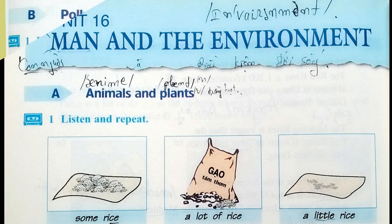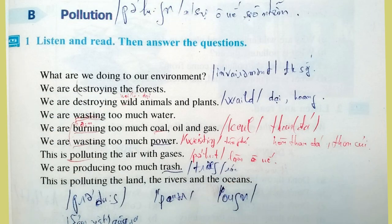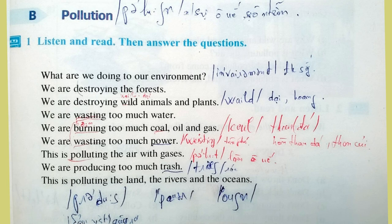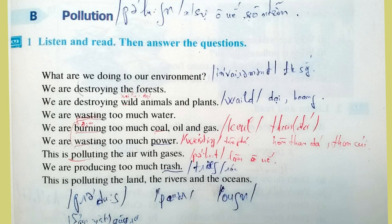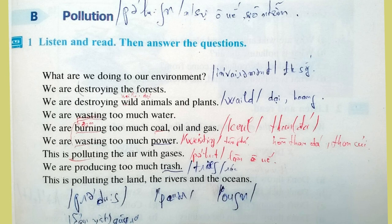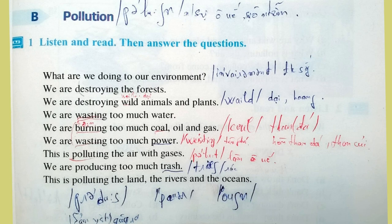Pollution. Listen and read, then answer the questions. What are we doing to our environment? We are destroying the forest. We are destroying wild animals and plants. We are wasting too much water. We are burning too much coal, oil, and gas. We are wasting too much power. This is polluting the air with gases.